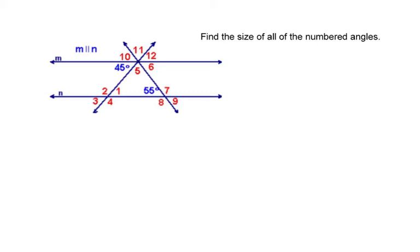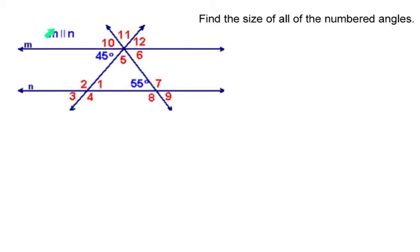When we look at this, we notice that first of all, it tells us that we have these two parallel lines. So M parallel to N means that line M is parallel to line N. And then we have these diagonal lines here going through, which we call transversals.